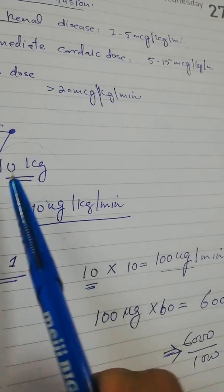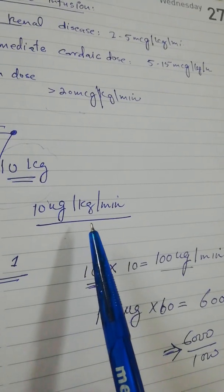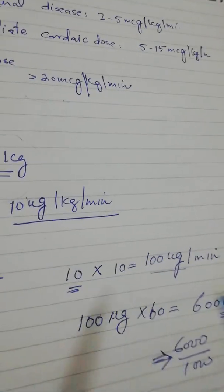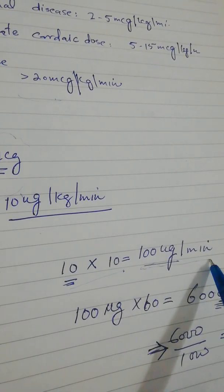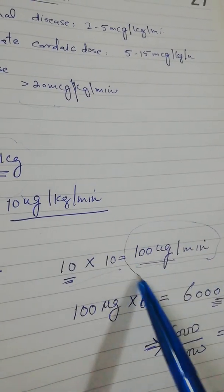As we know that the patient weight is 10 and the dose is 10 microgram per kg per minute, if we multiply these two we will get 100 microgram per minute. We have to give this patient 100 microgram.